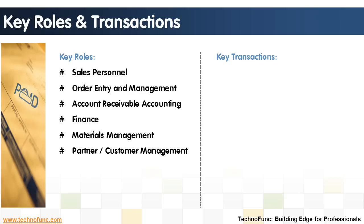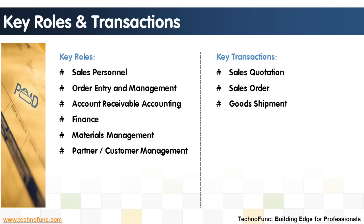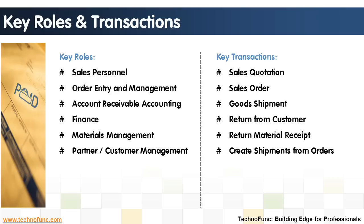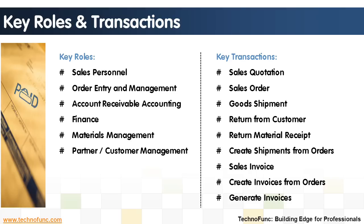Key transactions during the OrderToCash process: sales quotation, sales order, goods shipment, return from customer, return material receipt, create shipments from orders, sales invoice, create invoices from orders, and generate invoices.